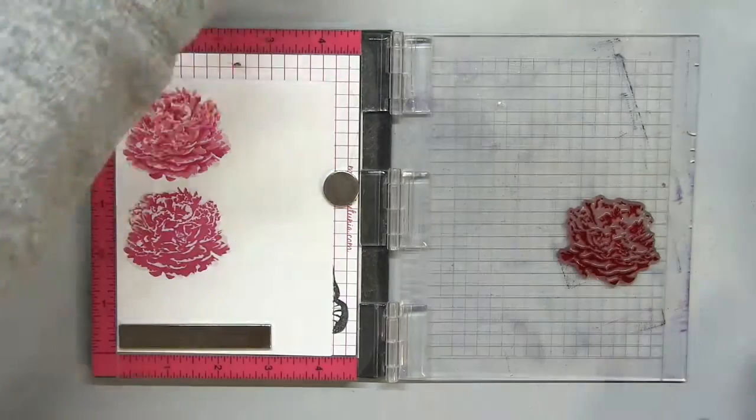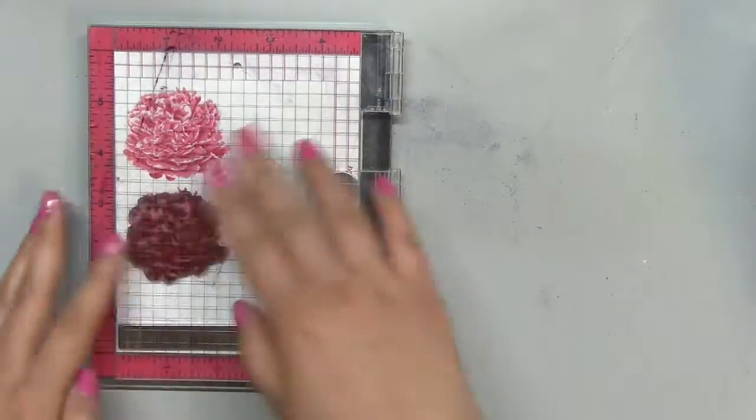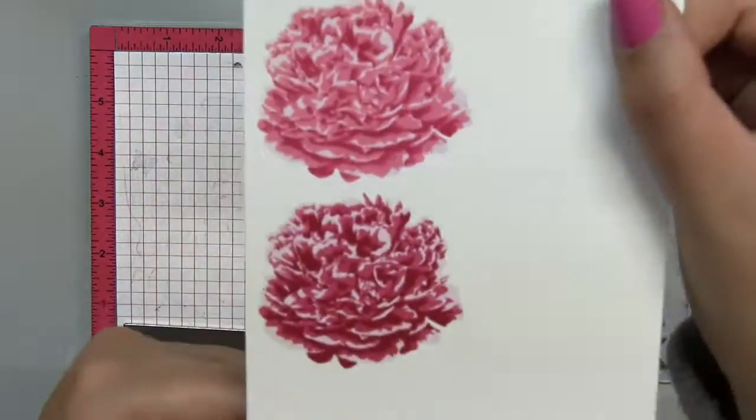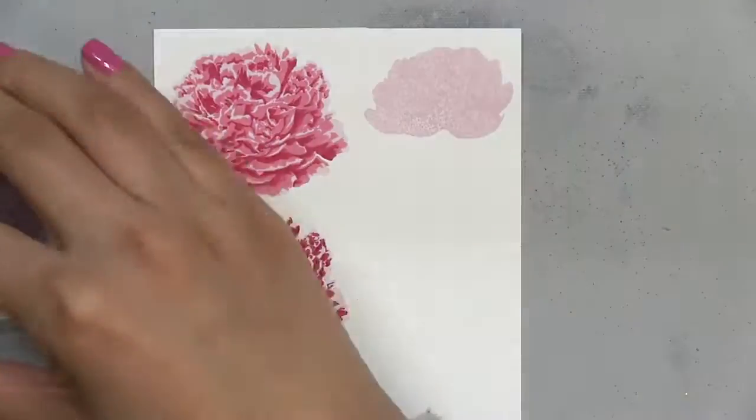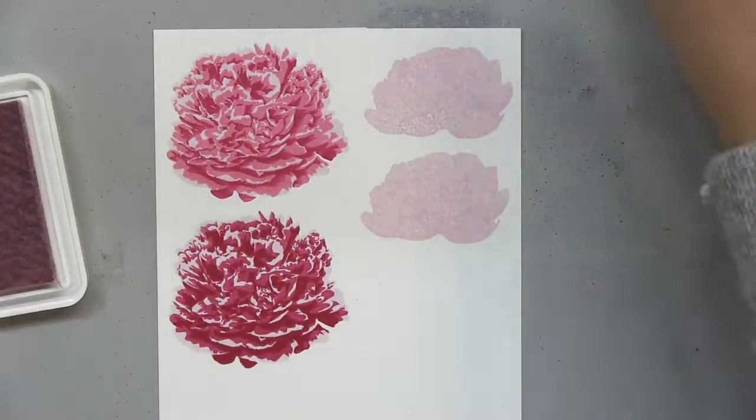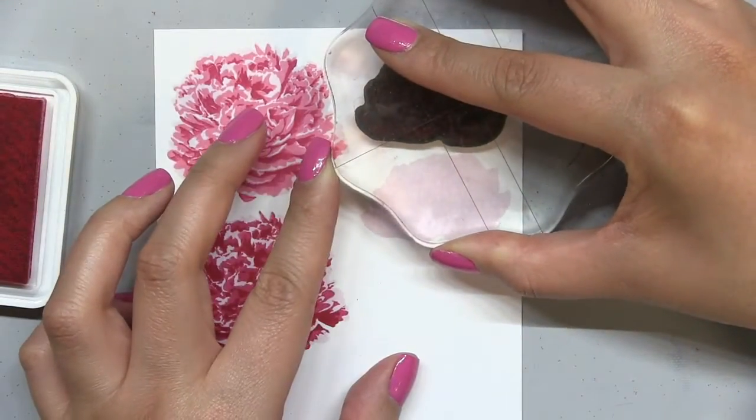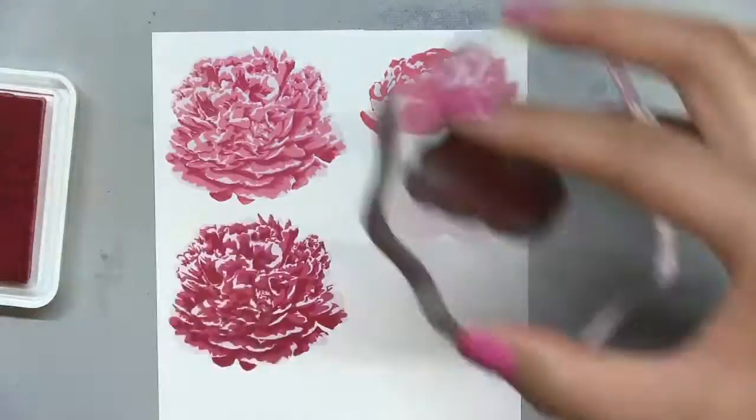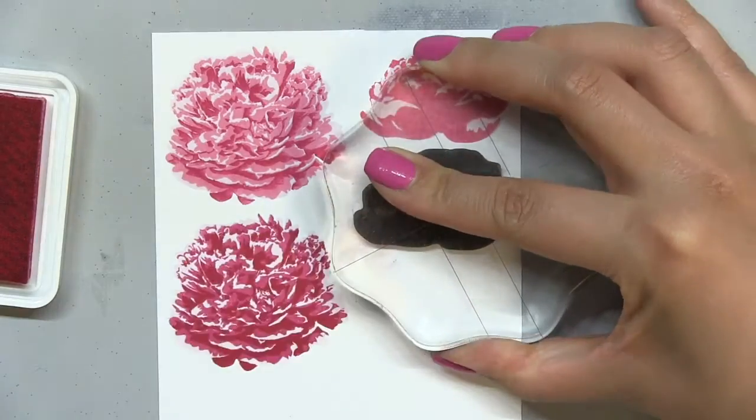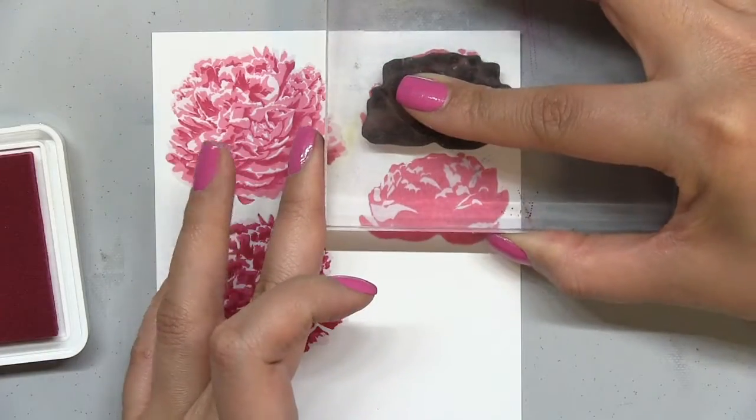After I finish stamping these two large blossoms, I'm going to go ahead and stamp the rest of my peonies in our Peony Collection Couture inks, which is our pink inks. So I don't need a MISTI tool to help me position this particular peony. You just have to line up that bottom edge.